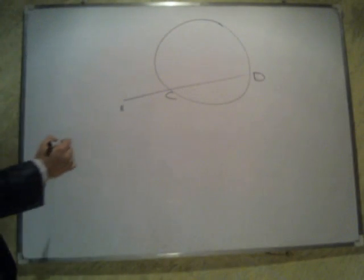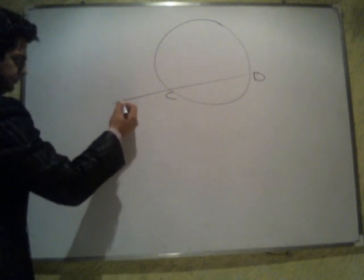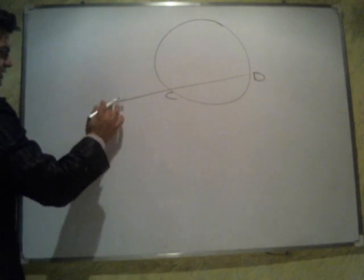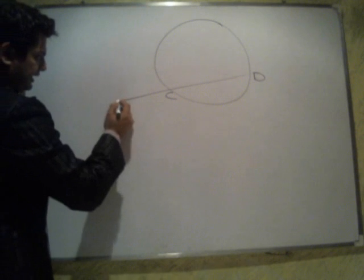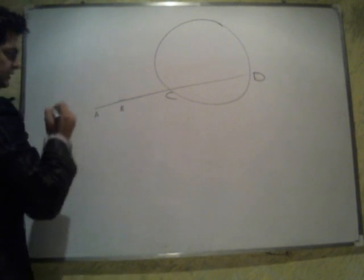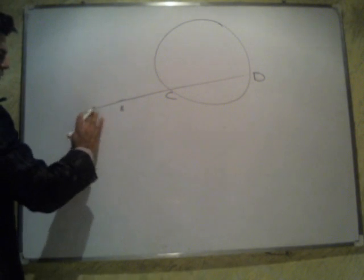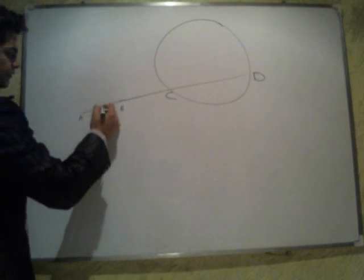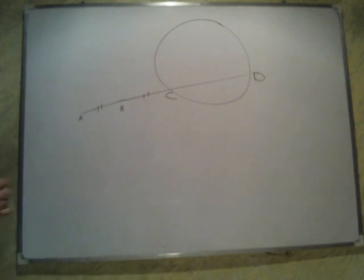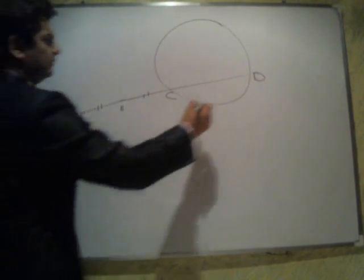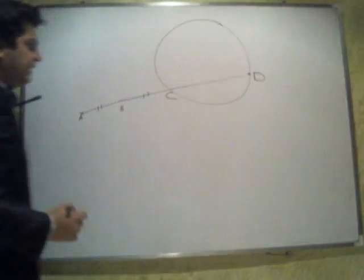What you need to do is, you need to produce CB to A such that BA is equal to BC. Now, you need to draw a circle with AD as diameter.